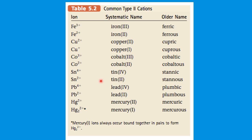In the older naming system, before Roman numerals were used, the plus 2 charge for copper ends in '-ic' — cupric — and the plus 1 charge ends in '-us'. For cobalt, the plus 3 charge ends in '-ic' and the plus 2 charge ends in '-us'. The pattern is: the ion with the higher charge ends with '-ic', and the ion with the lower charge ends with '-us'. For tin, tin(II) — the lower charge — is called stannous, and tin(IV) — the higher charge — is called stannic. Same root, but different suffix.